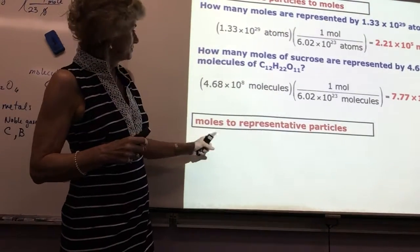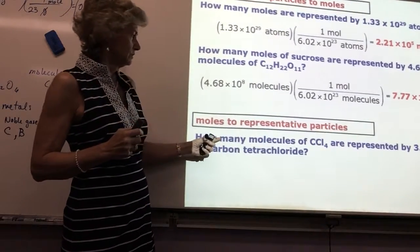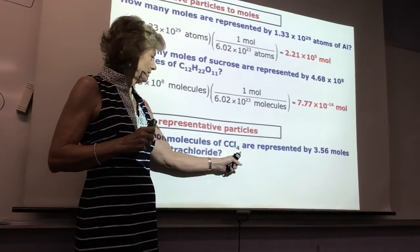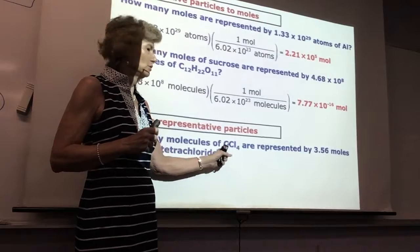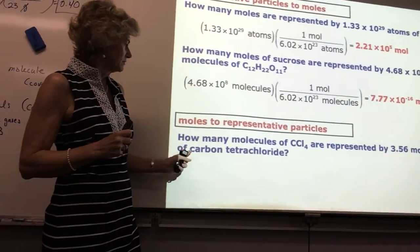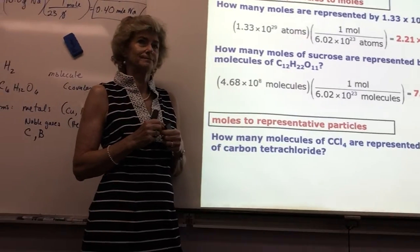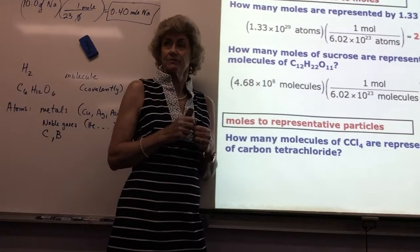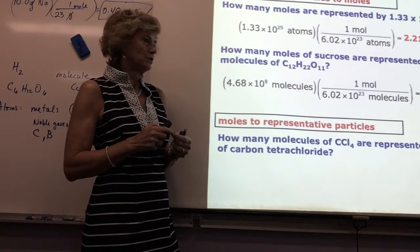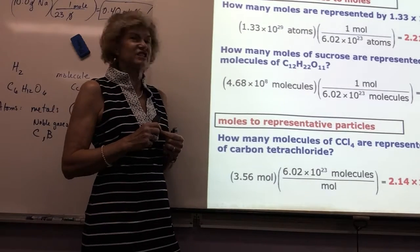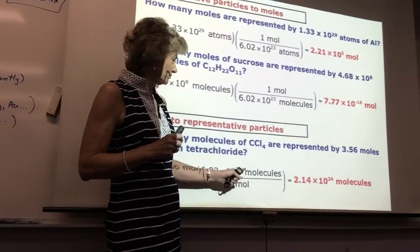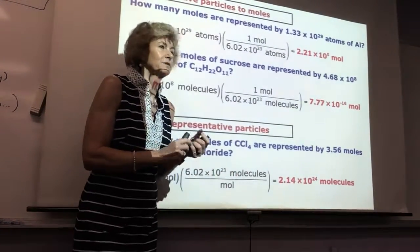Now we're going to go moles to representative particles. How many molecules of carbon tetrachloride are represented by 3.56 moles of carbon tetrachloride? You probably just did this in your head. 3.56 times 6.02 times 10 to the 23rd molecules, 2.14 times 10 to the 24th.